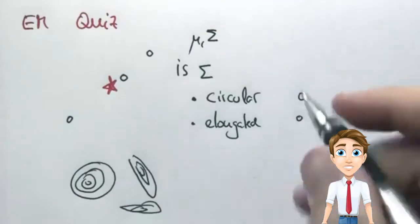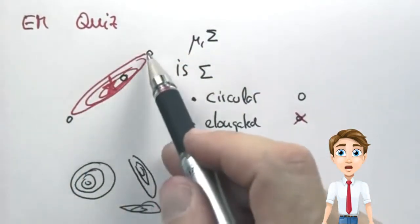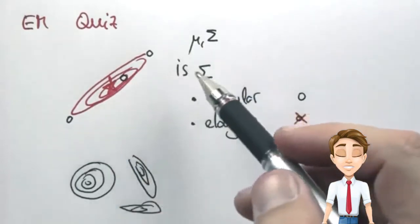And the answer is of course elongated. As you look over here, what you'll find is that this is the best Gaussian describing the data points. And this is what EM will calculate.